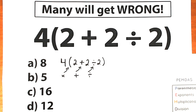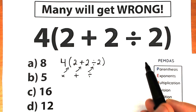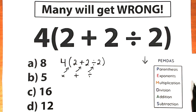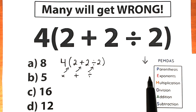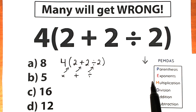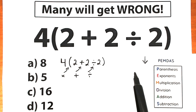Let's look at the PEMDAS order of operations — this is the most popular order of operation in the world. PEMDAS works in a strict order from top to bottom: first evaluate the expression inside Parentheses, next Exponents, then Multiplication and Division as a group, and the last step is Addition and Subtraction as a group.